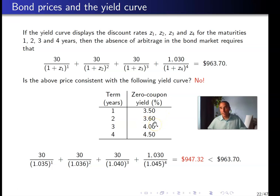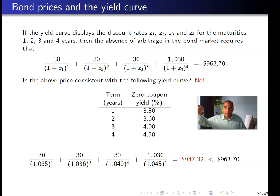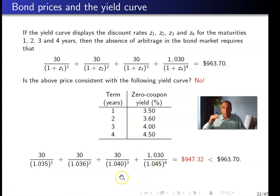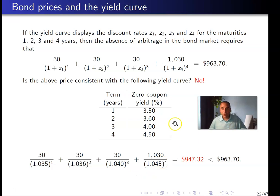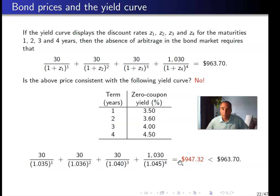3.6% is not a single rate applied from time zero to year two — it's an annual rate of 3.6%, meaning you discount a payment received in two years at (1 + 3.6%)². Similarly, a payment received in three years is discounted at (1 + 4%)³. When we apply the yield curve to the expected payments, we obtain a price of $947.32, which is below $963.70.